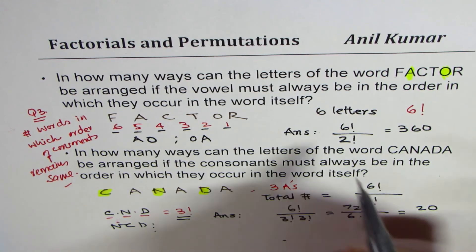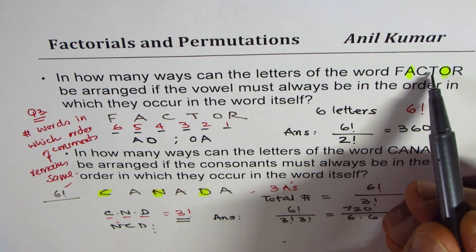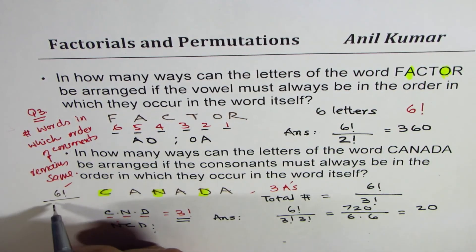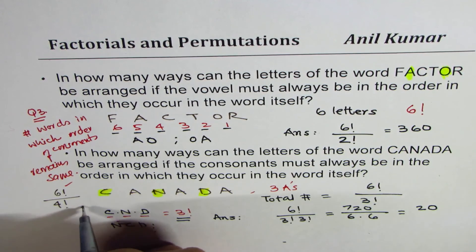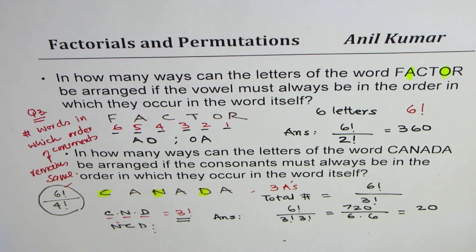Well, here is the answer. 6 factorial is the total number, and how many consonants are there? 1, 2, 3, 4. So that should be divided by 4 factorial. So that is how we can easily get our answer for similar questions.